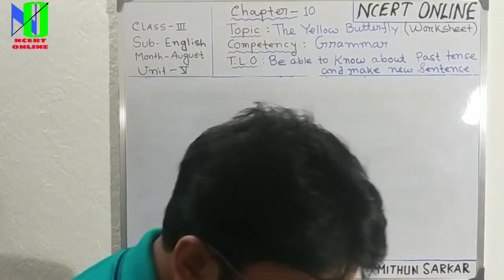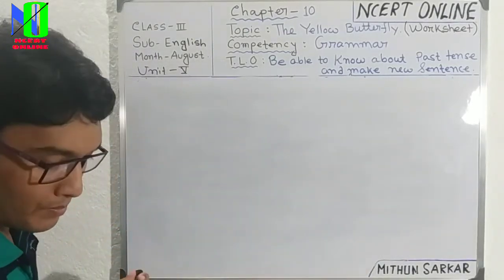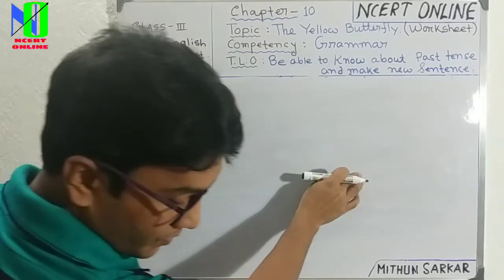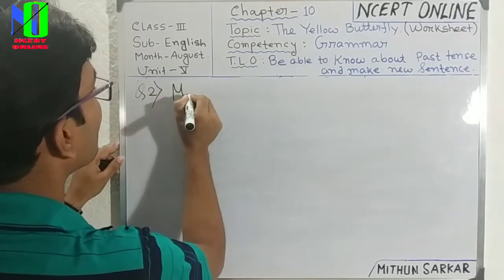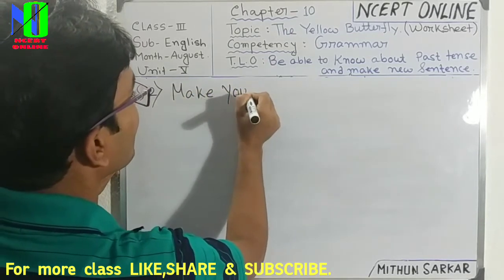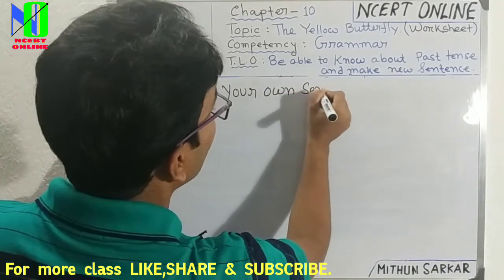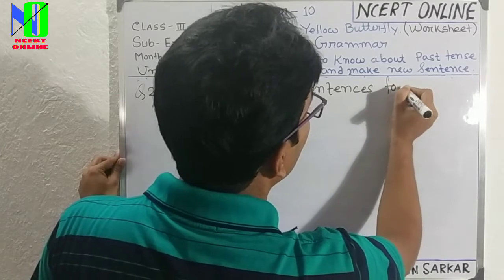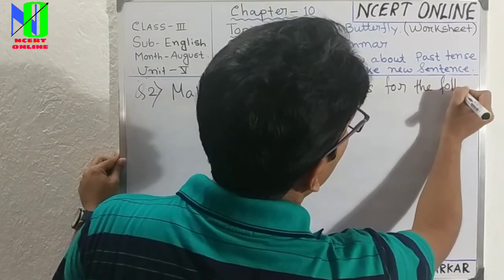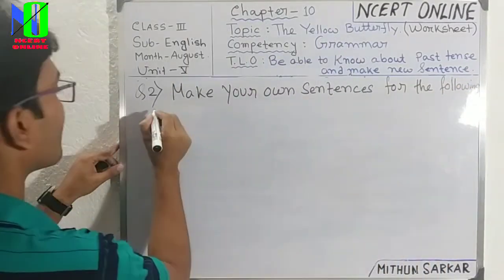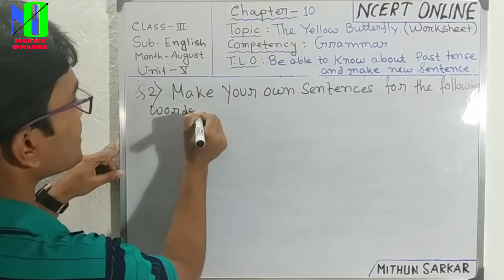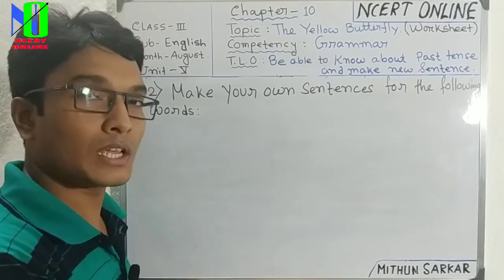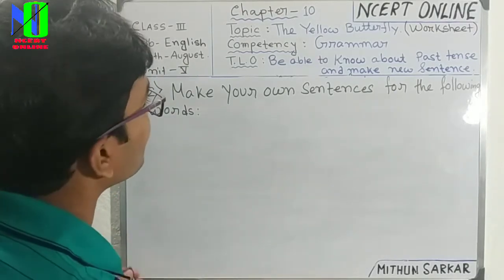Then portion number two: we will make some sentences from some particular words, and it is also related to our story. I will write portion number two — you note down with me. Make your own sentences for the following words. That means I will give you some words and you need to make your own sentence, but now I will write the sentences for you. Note down with me.